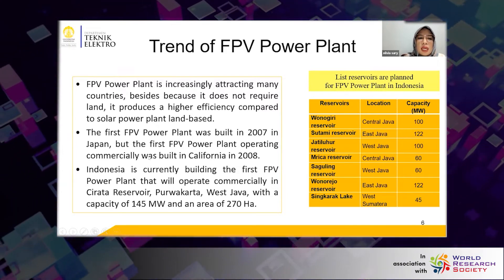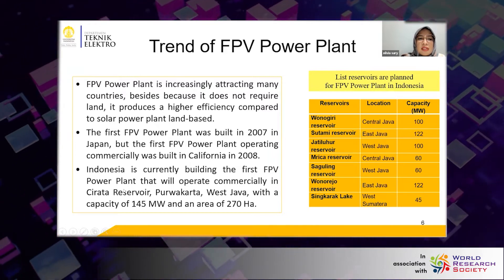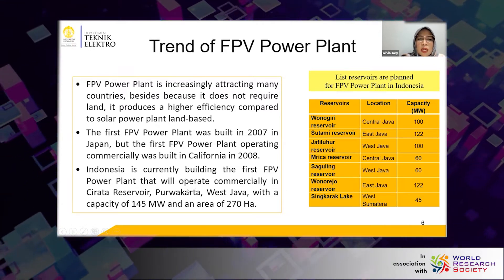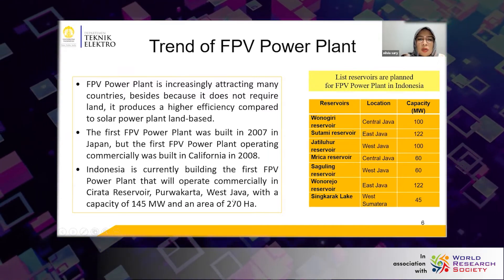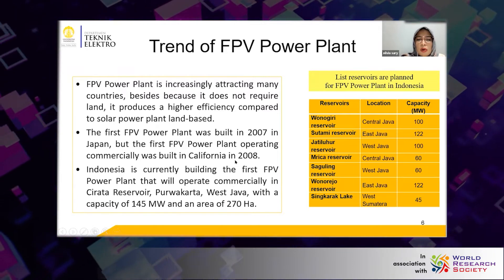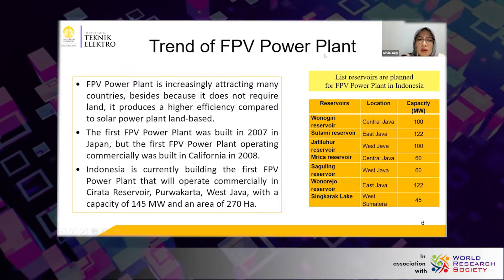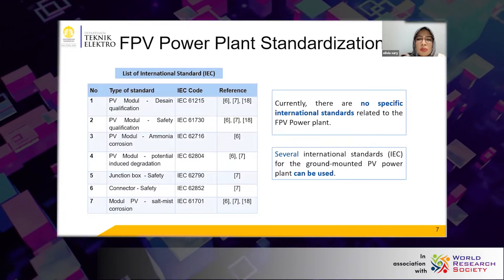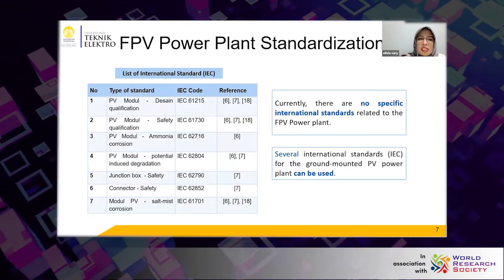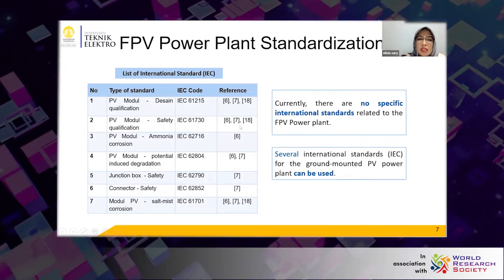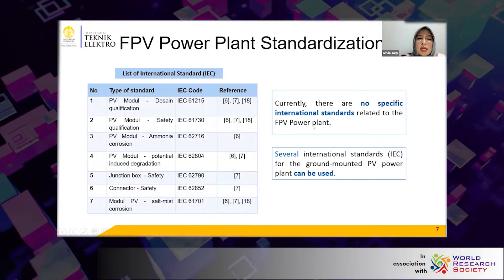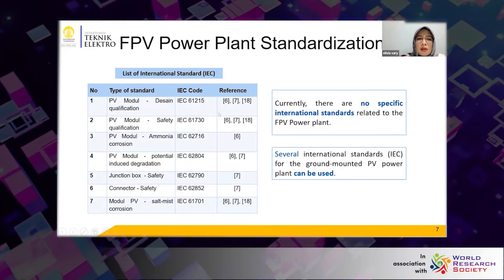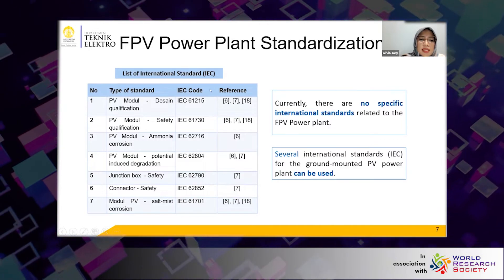Indonesia is currently building its first FPV that will operate commercially in the Cirata reservoir in West Java. This is the largest FPV in ASEAN with a capacity of 140 megawatt and an area of 270 hectares, targeted to operate commercially in November 2022. This is the list of reservoirs planned for FPV in Indonesia. According to World Bank research, there are currently no specific international standards related to the FPV power system. However, since the FPV power plant is generally similar to the ground-mount solar power plant, several international standards for ground-mount solar power plants can be applied to FPV, as summarized in this table.